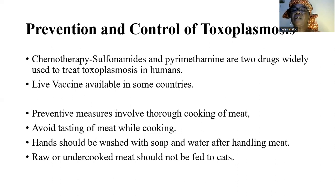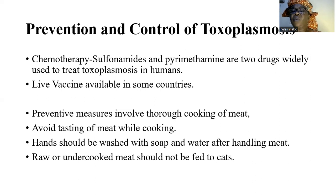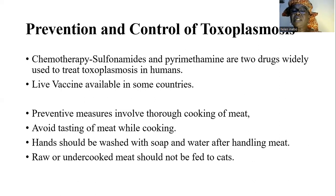Humans should not eat undercooked or raw meat. For pregnant women in particular, they should avoid tasting meat while cooking. Hands should be washed with soap and water after handling meat. Raw or undercooked meat should never be fed to cats, because that is the source of the tissue cysts — bradyzoites — to cats.